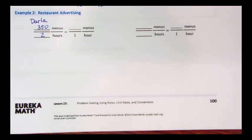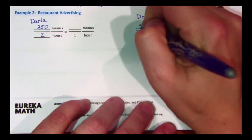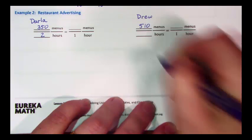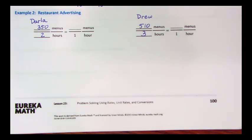You have another student, Drew, who delivers 510 menus in three hours. So we're going to put Drew over here. 510 menus in three hours. You promise a ten-dollar bonus to the fastest worker, since time is money in the restaurant business. How can you figure out who gets the bonus?